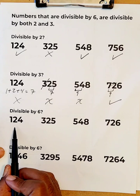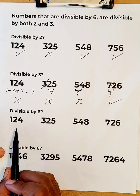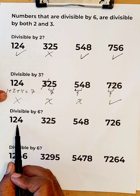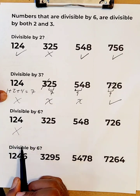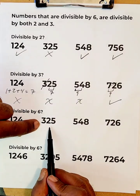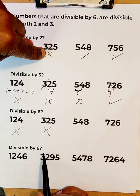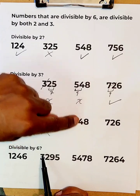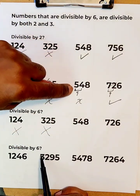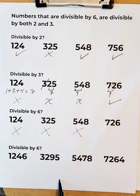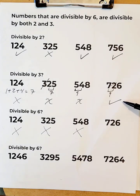To be divisible by six, a number has to be both divisible by two and three. 224 is divisible by two but not by three, so it is not divisible by six. 325 is not even divisible by two, so it's not a consideration. 548 is divisible by two but not by three, so it wouldn't work. And 726 is divisible by both two and three, so this number is divisible by six.